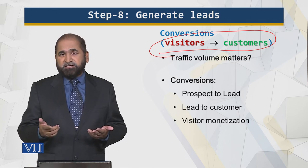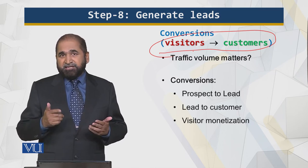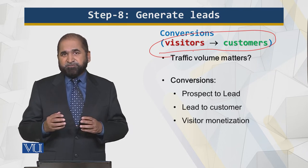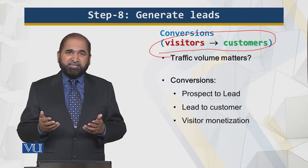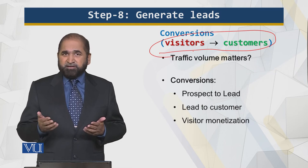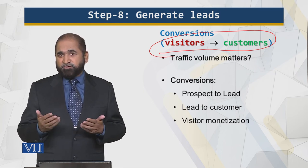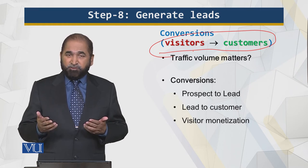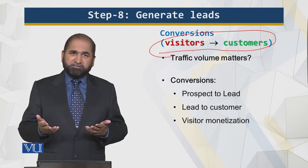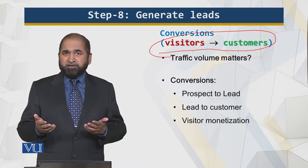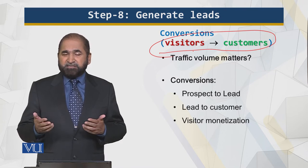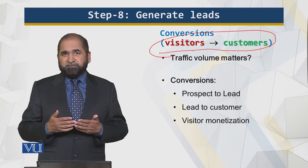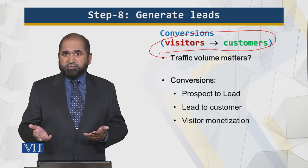So prospect to lead — convert the prospect into a lead, then lead to customer. Once I have the lead, once the potential customer has signed their registration form, given their email address, name and phone number, then when I have a sale, when I am offering something, I can send them a message, an email, a link, a document — I can do many things. But first I should have the lead, and that lead then converts into a customer.